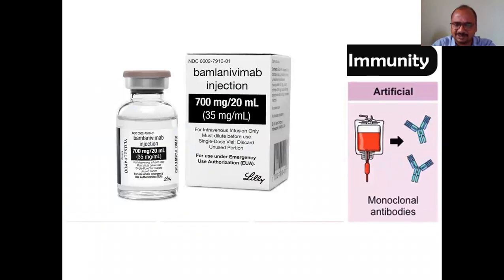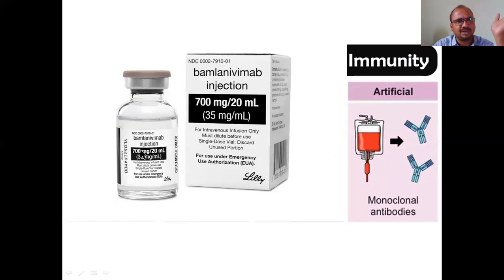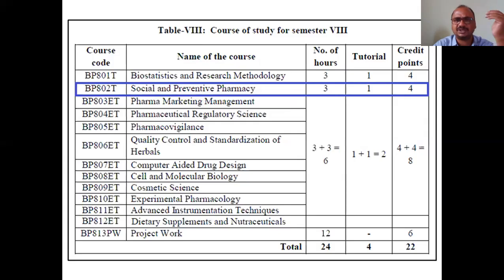Monoclonal antibodies (MAb) - this is a monoclonal antibody, possibly a biotechnological product. Not only plasma from recovered patients, but also biotech-prepared antibodies can be taken by the patient. We are studying the subject of social and preventive pharmacy, also called social and preventive medicine, which is very important for MBBS, nursing, pharmacy, and diploma in lab technicians.